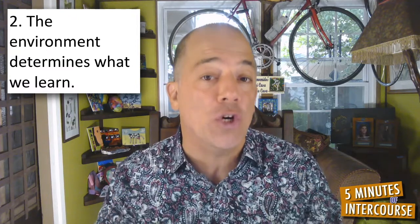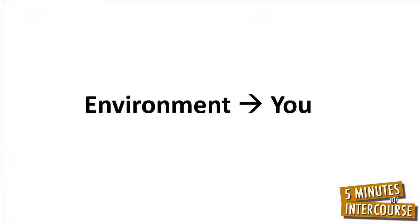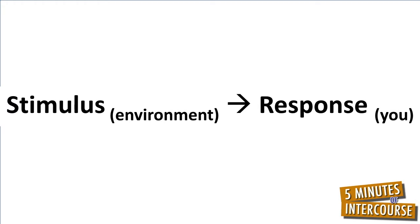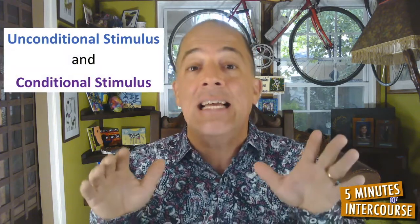Let's revisit classical conditioning's second premise in context. The environment is not only determining what we learn — it's determining who we love. In the simplest sense, classical conditioning is a model of the relationship between you and the environment. In this model, you are represented as a response, defined as everything you do, and everything you do is caused by your environment. Classical conditioning represents the environment as a stimulus, defined as the people, places, and things that surround you. There are two types of stimuli that compose your environment: an unconditional stimulus and a conditional stimulus.